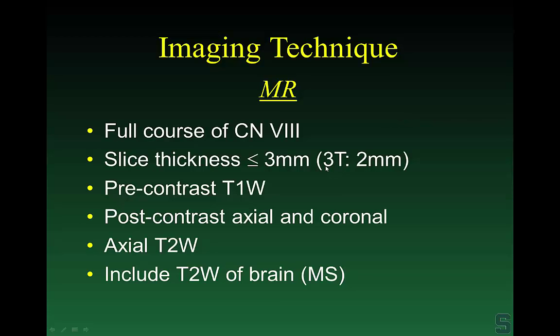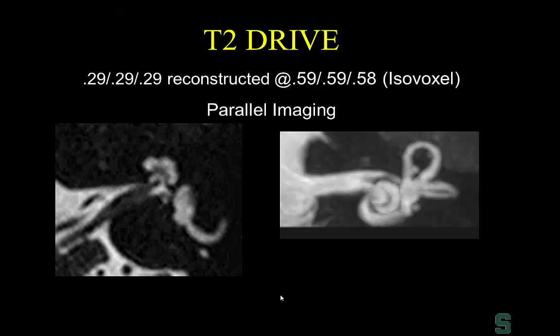For MR, we image the full course of cranial nerve 8. Slice thickness should not exceed 3mm — at 3 Tesla we do 2mm. Include precontrast T1, because certain pathologies such as fat in the petrous apex versus cholesterol granuloma can be missed without it. Remember, other things besides vestibular schwannoma can cause hearing loss, including multiple sclerosis. We routinely obtain high-resolution heavily T2-weighted images — call it DRIVE, CISS, or FIESTA — giving glorious detail of the modiolus and all four nerves of the inner ear.